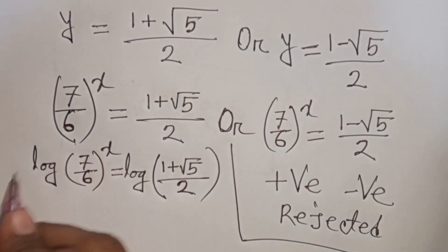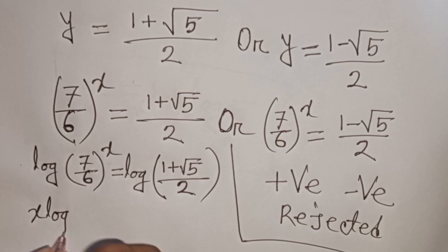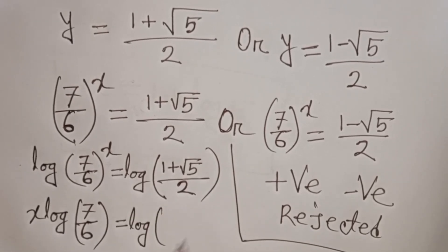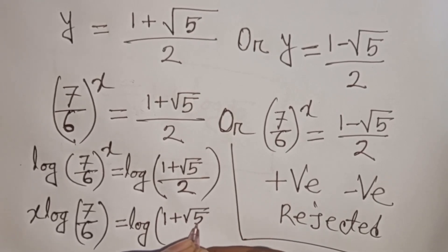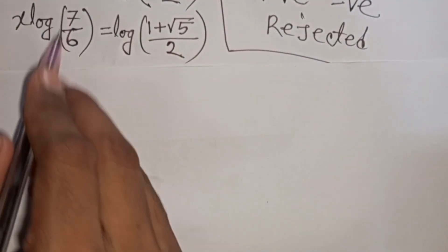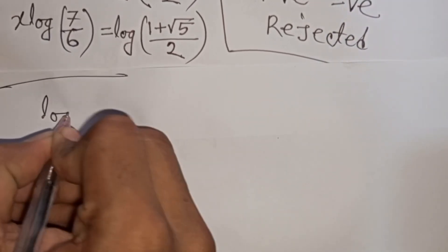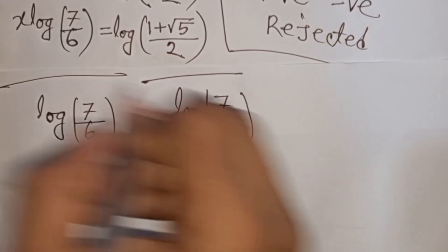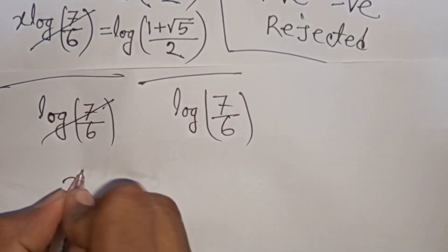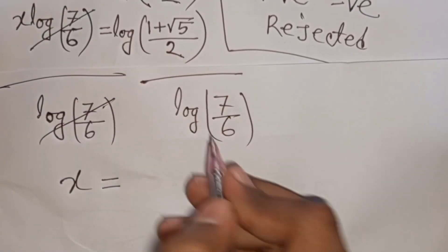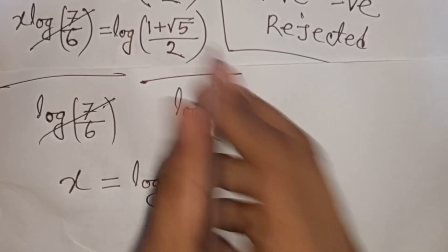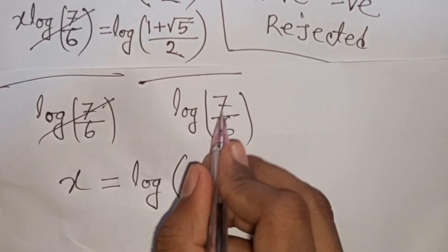This power x will move to the base using logarithms. So it becomes x times log(7/6) equals log of (1 + √5)/2. We need the value of x, so dividing both sides by log(7/6), x equals log base (7/6) of (1 + √5)/2.